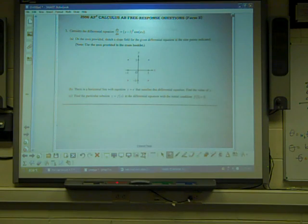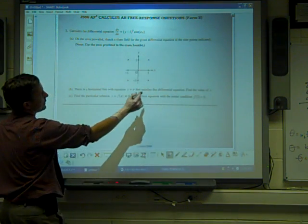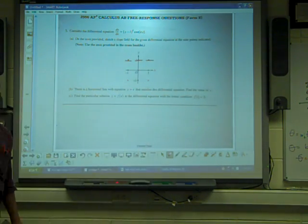Sketch the slope field. Well, first thing, that's pretty easy. When I look at this, I say, hey, if y is 1, then they're all zero. So those are the easy three.